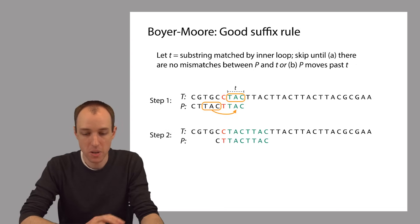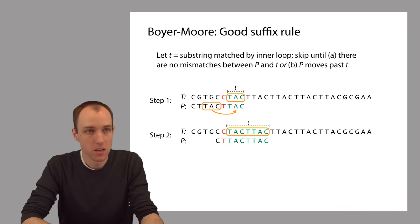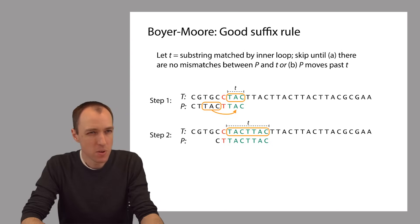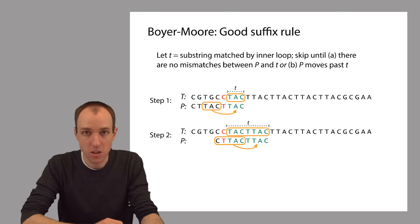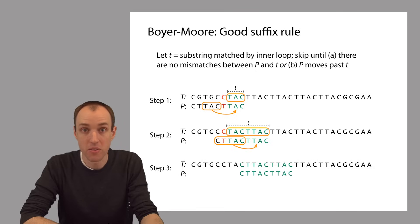After shifting, we have a new alignment with several matches, giving us a new small t. Now we ask how far to shift P before there are no new mismatches between P and small t. There is a prefix of P — C-T-T-A-C — that matches a suffix of small t, so that's when we stop shifting, skipping three more alignments. So now we have two rules: the bad character rule, which tries to turn a mismatch into a match, and the good suffix rule, which tries to keep the matched characters as matches without turning them into mismatches.